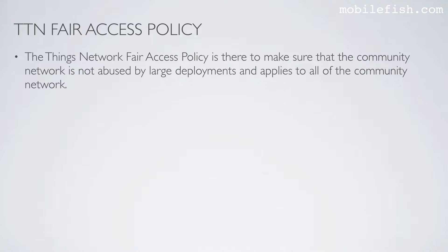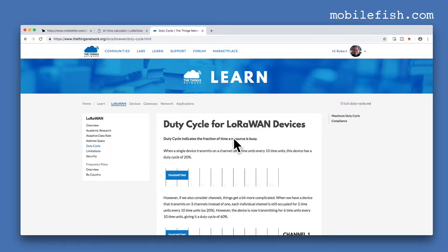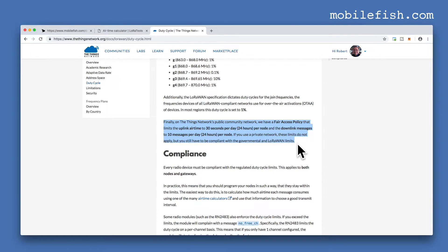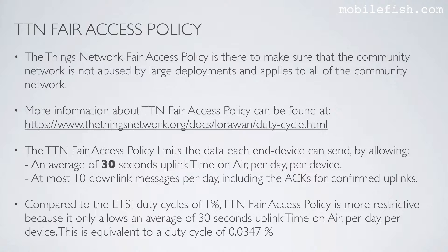The Things Network Fair Access Policy is there to make sure that the community network is not abused by large deployments and applies to all of the community network. The policy limits the data each end device can send by allowing an average of 30 seconds uplink time on air per day per device and at most 10 downlink messages per day, including acknowledgments for confirmed uplinks. Compared to the ETSI duty cycle of 1%, the Fair Access Policy is more restrictive, allowing only 30 seconds uplink time on air per day per device. This is equivalent to a duty cycle of 0.0347%.